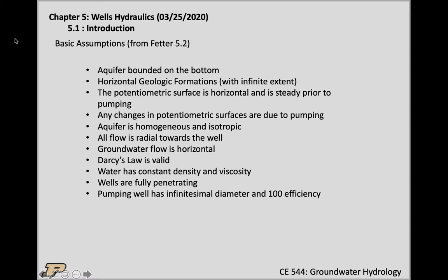The groundwater flow is horizontal — that should remind you of the Dupuis assumption that we've used in chapter 4, so this is very similar to assumptions we've had before. Darcy's law of course is valid. The water is of constant density and viscosity, so we don't pay attention to temperature changes. The wells are fully penetrating — for the general equations we derive, we assume that the well is pumping throughout the entire depth of the aquifer. For confined aquifers they have a depth of B, and typically we assume the well is pumping throughout the entire B thickness, which in reality is not always true. Pumping wells are essentially very small and 100% efficient, which is usually true for typical wells.